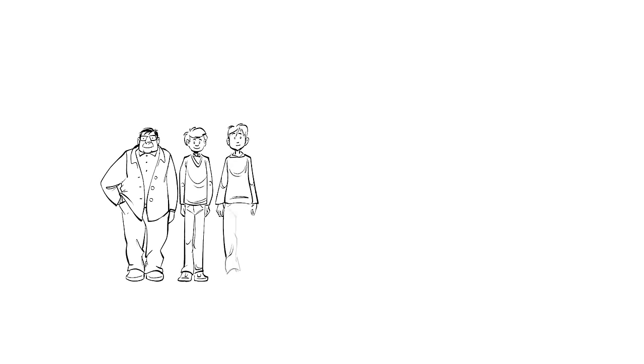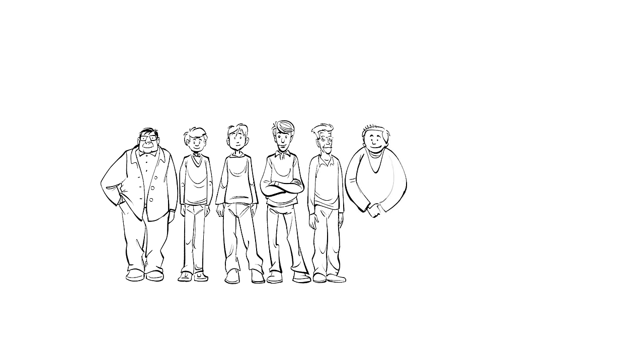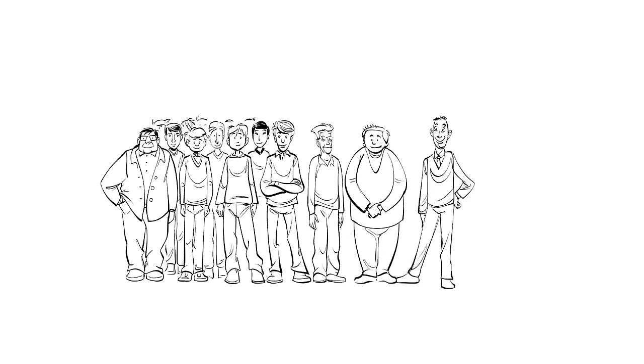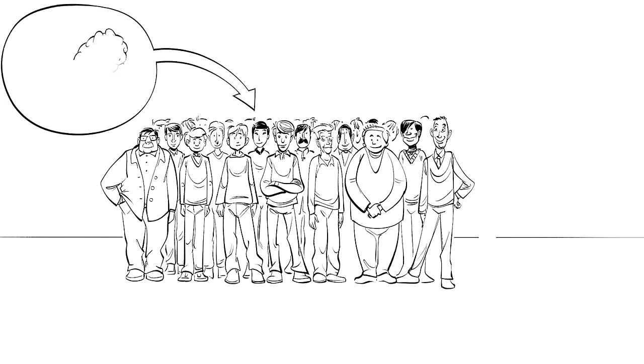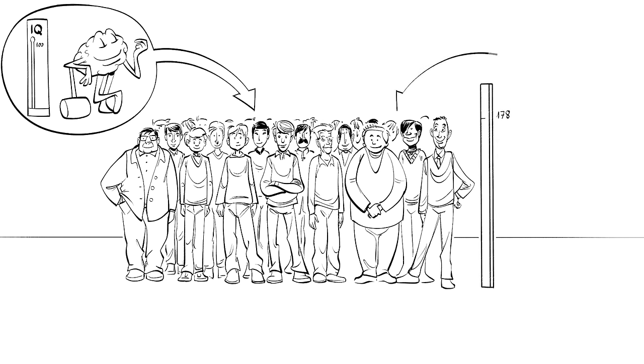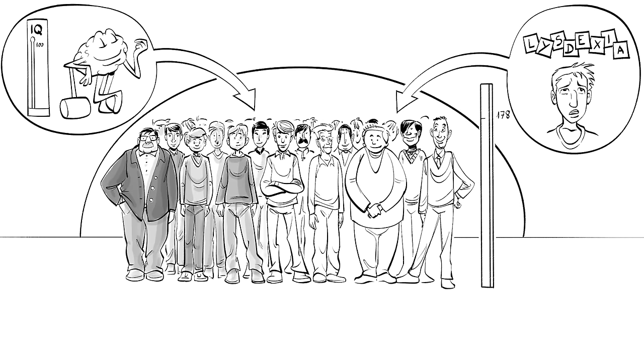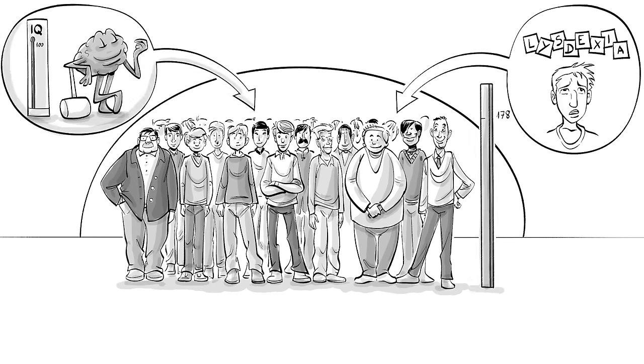Take, for example, a group of 100 white American men in their early 20s, and you will probably find, on average, an IQ of 100, a height of 178 centimeters or around 5.8 feet, and that 10 have spelling problems.